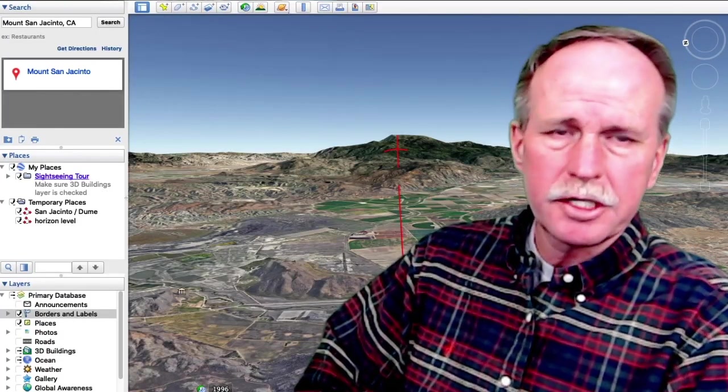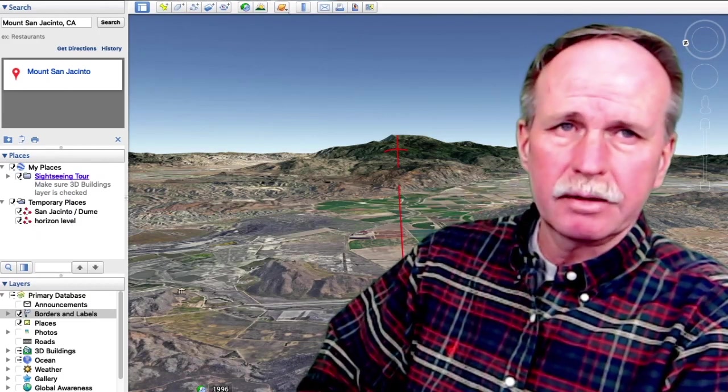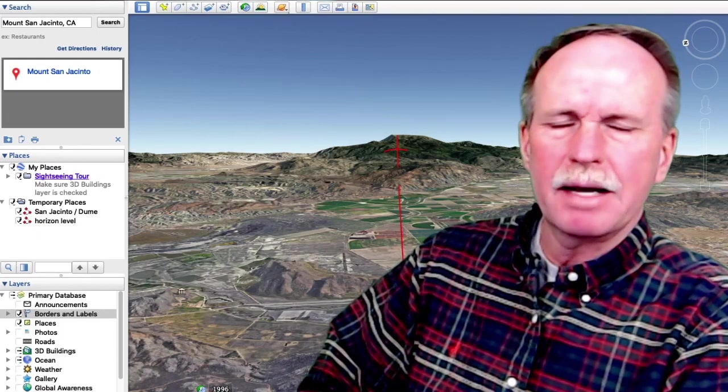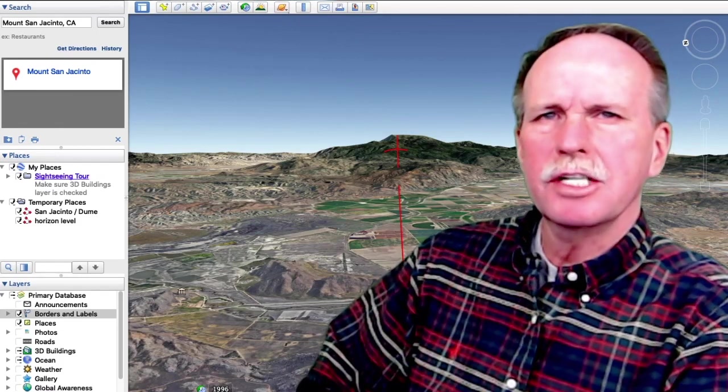Now, recall of course, that that crosshair was put well up the side of the mountain. There's over 6,000 feet missing of that mountain due to Earth curvature. But if you don't believe me, I've got a second way to show you.